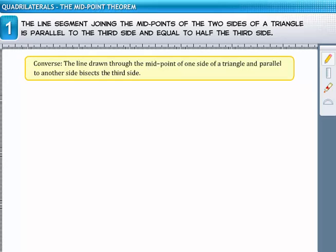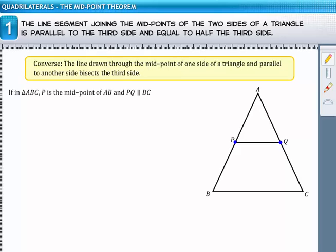That is, if, in a triangle ABC, P is the midpoint of AB and PQ is parallel to BC, then Q is equal to QC.